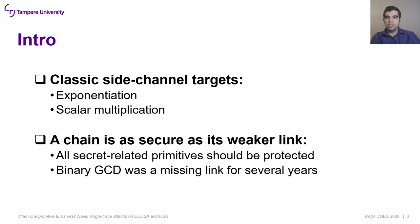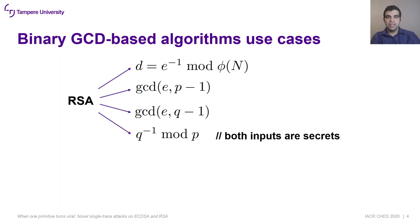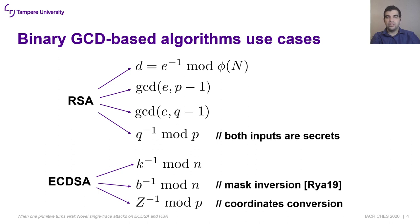Traditionally, point multiplication and scalar multiplication algorithms have been targets of side-channel analysis. However, it is also important to protect other primitives that handle secret data, like the binary GCD-based algorithm. This algorithm and its variants for computing modular inverses have many use cases in cryptography — for instance, RSA uses it during key generation, while ECDSA uses it during signature generation. Sometimes inversions are added as countermeasures, like the inversion of the nonce in response to the hidden number problem. Therefore, it is important to analyze implementations for side-channel vulnerabilities.